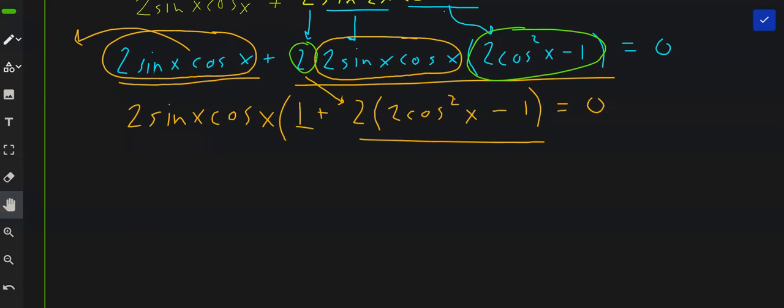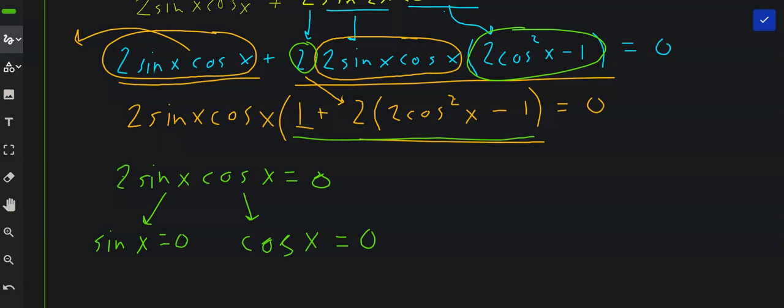So if we set the first, the 2 sine x cosine x equal to 0, that can only happen if sine x is 0 or if cosine x is equal to 0. Or this other thing equals 0.